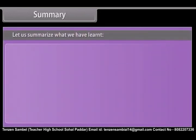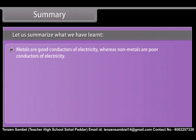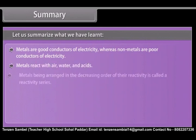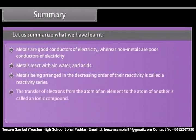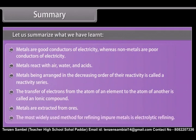Let us summarize what we have learned. Metals are good conductors of electricity. Whereas non-metals are poor conductors of electricity. Metals react with air, water and acids. Metals being arranged in the decreasing order of their reactivity is called a reactivity series. The transfer of electrons from the atom of an element to the atom of another is called an ionic compound. Metals are extracted from ores. The most widely used method for refining impure metals is called electrolytic refining.